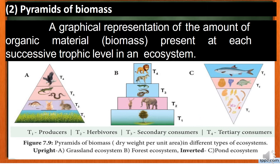Next is the inverted pyramid — this is the pond ecosystem. Biomass refers to the weight of an organism — carbon weight, dry weight, or fresh weight of an organism. In the pond ecosystem, the producers like phytoplankton are small, but the top consumers like fish have more biomass at the bottom of the pyramid. So the pond ecosystem gives an inverted pyramid of biomass.